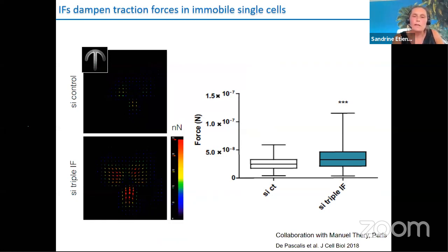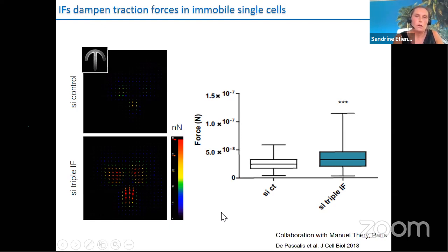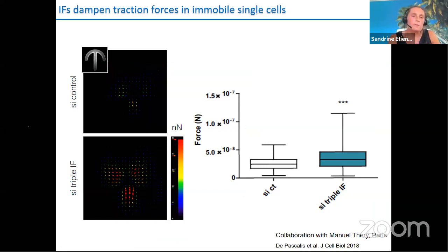Loss of IFs also alters the actin cytoskeleton. In normal migrating cells you find many interjunctional transverse arcs bridging cells at adherent junctions, plus longitudinal stress fibers directed in the direction of movement. In IF-depleted cells, focal adhesions distributed throughout the cell are much stronger, associated with abundant longitudinal stress fibers but an almost complete disappearance of the actin transverse arcs. This increase in stress fibers led us to investigate traction forces. In collaboration with Manuel Théry in Paris, cells plated on crossbow micropatterns showed that IF depletion leads to a strong increase in traction forces exerted on the substrate.